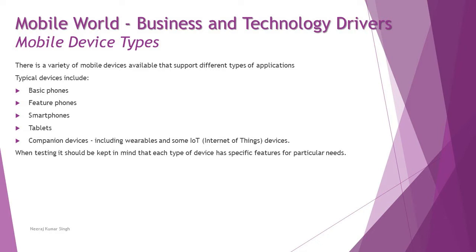There is a variety of mobile devices available that support different types of applications. The typical devices include basic phones like keypad phones, feature phones, smartphones, tablets, and companion devices including wearables and some IoT — Internet of Things devices.